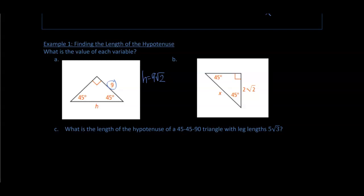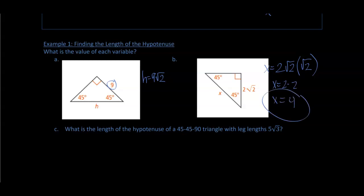Similarly, in part b, we have a 45-45-90 triangle with a leg of two times the square root of two, and we are trying to find the hypotenuse. We take the leg — two times the square root of two — and multiply by the square root of two. Since the square root of two times the square root of two equals two, we get two times two, so x equals four.